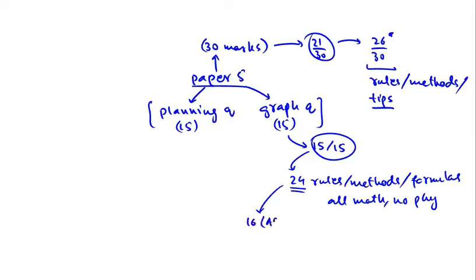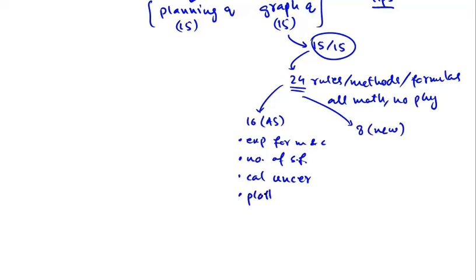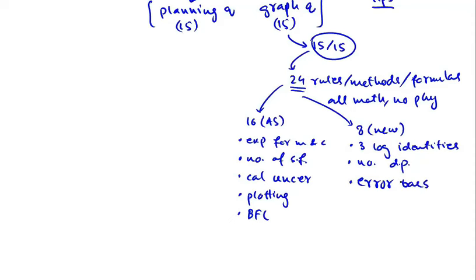You don't have to learn these rules from scratch — you have already learned most of them in AS. For instance, 16 of them were learned in AS, and you only have to learn 8 new rules now. Rules learned in AS include determining expressions for gradient and y-intercept, significant figures in calculated quantities, calculating uncertainty, plotting points, drawing best fit lines, etc. New rules include three logarithmic identities, decimal places in logarithmic functions, drawing error bars, and drawing the worst acceptable line.